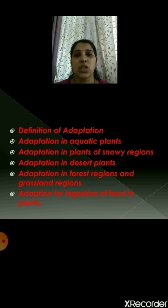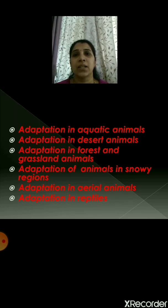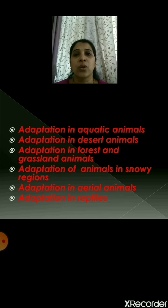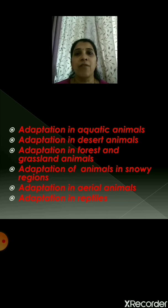Then we saw about the adaptation for ingestion of food in plants. We took the example of the plant cascuta, that is dodder, which is a parasitic plant that depends on the host plant for food and water. This plant is also deficient in nitrogen, so it improves its deficiency by consuming insects — it has the ability to attract insects. We also took the example of fungi, which does not have chlorophyll and cannot perform photosynthesis, so it has root-like fibers which absorb nutrients from starchy substances like bhakri or bread.